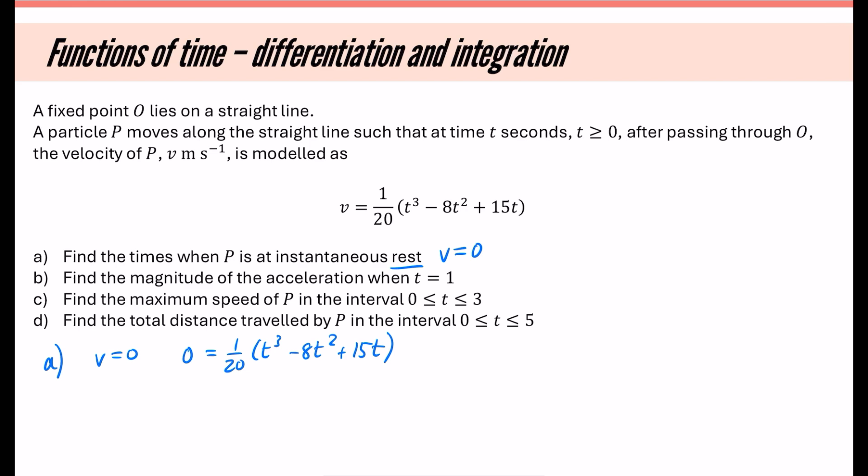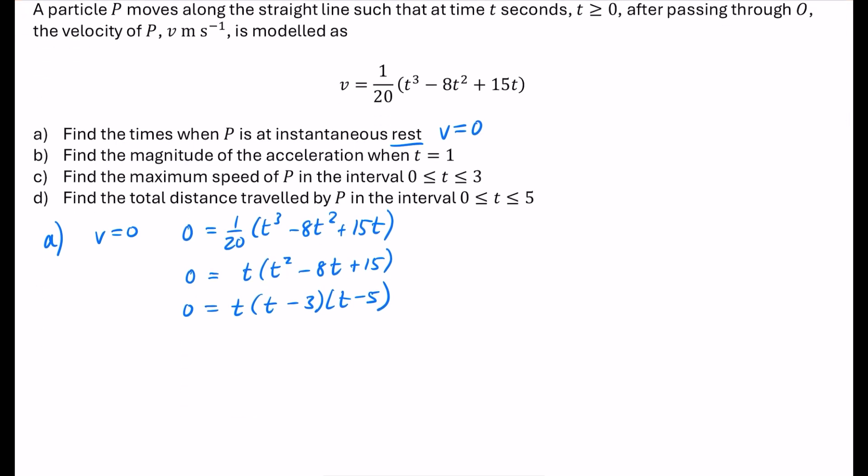We just need to solve that. I'm going to factorize. I'm going to divide by the 1/20 and factorize out the t. So we get t² - 8t + 15. When I factorize that double bracket, I get (t - 3)(t - 5). So the solutions are t = 0, t = 3, or t = 5. We've got those three different times when it's at instantaneous rest.